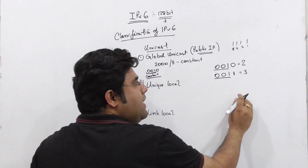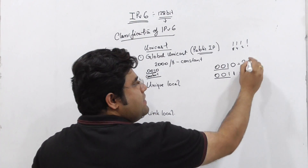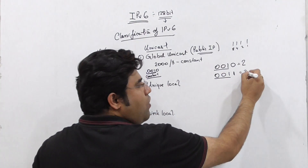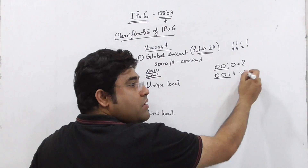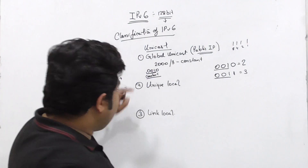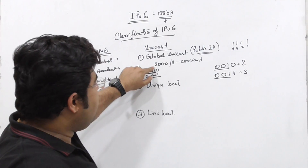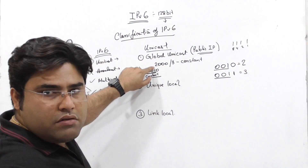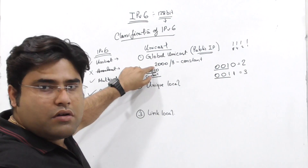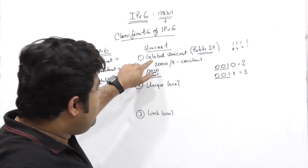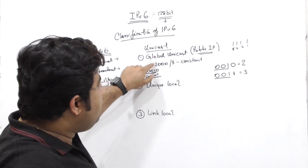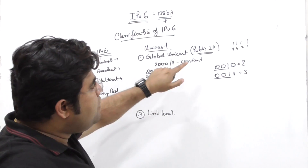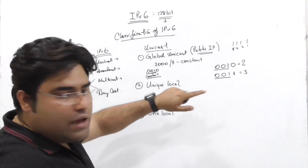Any addresses starting with 2 or 3 are global unicast. Any address starting with 2 is constant, and addresses starting with 2 or 3 fall into the global unicast range.